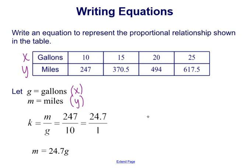If k is equal to y over x, we have k is equal to m over g. You can look at any column in your table. In this example, looking at the first column, we're looking at 247 miles over 10 gallons, which as a unit rate is 24.7 over 1. Now we have our equation instead of y equals kx, we have m equals kg. That's our intermediate step. Now k is going to be 24.7, so our equation is m equals 24.7g.